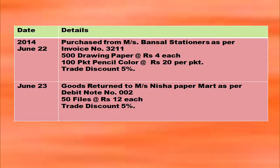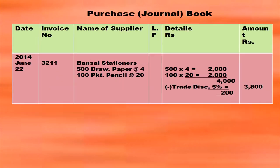Purchase from Messrs Benzel Stationers: 500 drawing paper purchased and 100 packet pencil colour purchased, with trade discount at 5%. On June 23rd goods are returned to Messrs Nisha Paper Mart, so two books need to be prepared: one purchases book and another purchase returns book. In the purchases book, Benzel Stationers: 500 drawing paper at rupees 4 → 500 × 4 = 2,000; 100 packet pencil at rupees 20 → 100 × 20 = 2,000. Total = 4,000. Less trade discount 5%: 4,000 × 5/100 = 200. So 4,000 minus 200 = 3,800.